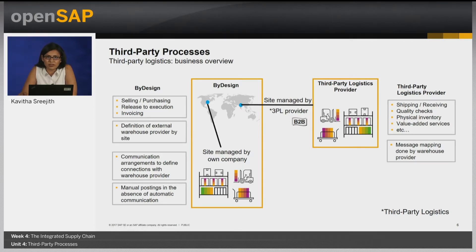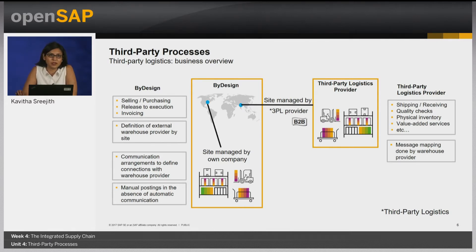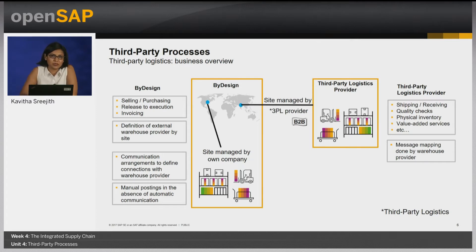With the 3PL functionality in Business by Design, it is possible to connect the system to an external system of the 3PL provider. Setup-wise on the Business by Design side, a 3PL site must be marked as an externally managed warehouse. This is a very specific setting that has to be done at the time of creation, because once inventory is booked on a site, it cannot be changed to an externally managed site.